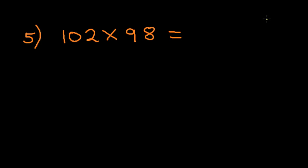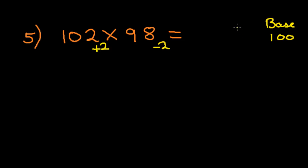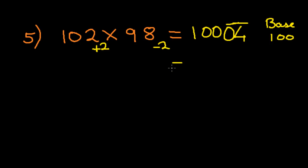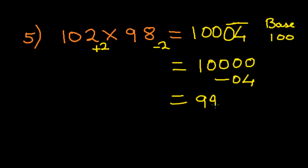Let's take 102 and 98. Both these numbers are closer to 100, so we take the base as 100. If we subtract 102 from 100 we get plus 2, and 98 minus 100 gives minus 2. Next we multiply these two numbers: plus 2 into minus 2 gives minus 4. So instead of writing minus 4, we write it as 4-bar. Since the base is 100, we add another 0 before it, making it 04-bar. Now 102 minus 2 gives 100. Since this is a vinculum (bar) digit, we subtract: 10000 minus 04 gives 9996. The answer is 9996.